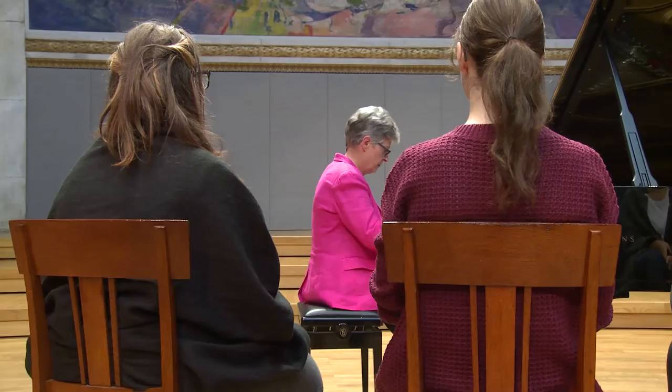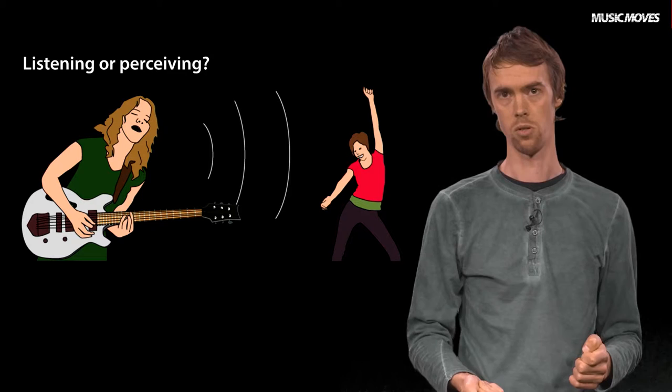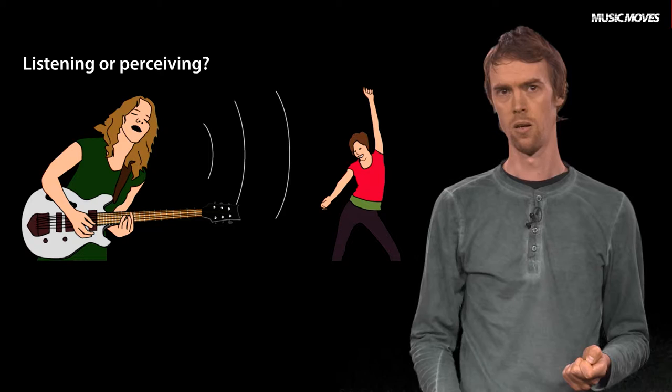Even the most attentive audience of classical music does not only listen when perceiving music. In addition to auditory input, visual input plays an important role. Movement, either as physical body movement or just sensations of movement, is an important part of music perception, as well as emotional responses, a sort of attunement to the emotions expressed in the music.